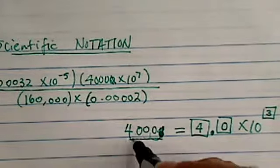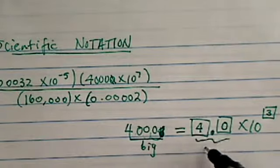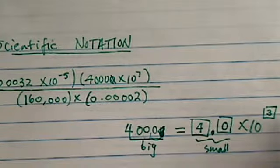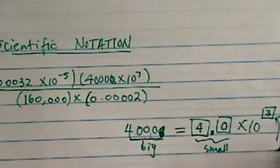Notice this number was pretty large, a big number, and I made it into a small number. From a big number to a small number, so this one's going to be a positive.